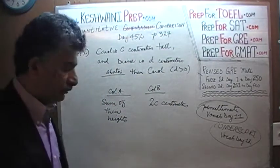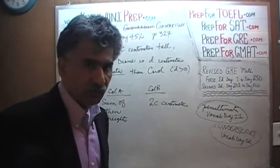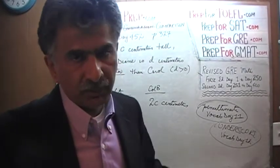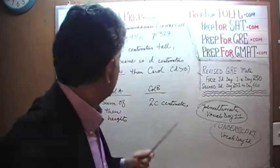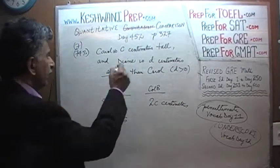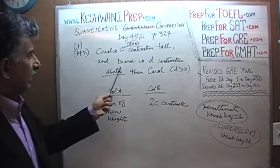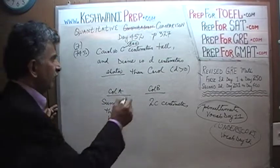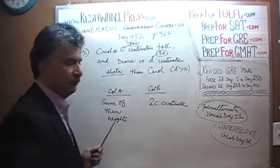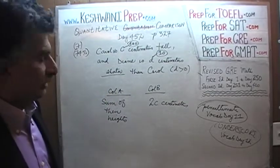The simplest and quickest way to tackle this problem is to simply make up numbers — that's exactly what we are going to do. Carol, we are told, is C centimeters tall. I am going to pretend Carol is 100 centimeters tall. And then they tell us that Diane is D centimeters shorter. Let's make up a number — I am going to pretend she is 10 centimeters shorter than Carol.